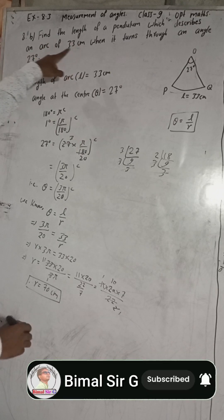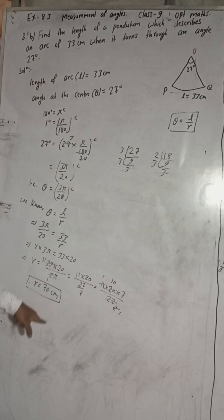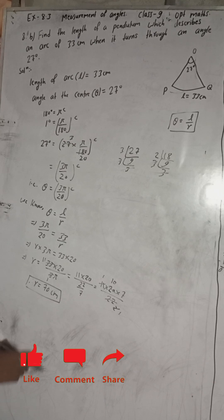Find the length of the pendulum. Therefore the length of the pendulum is 70 cm. So this is the complete solution of this question.